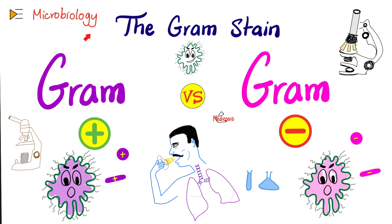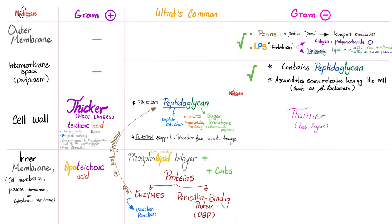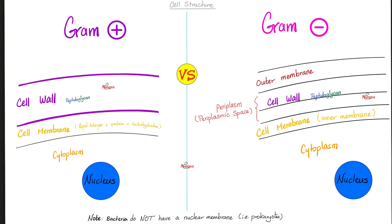Here's the structure of the bacteria. We have a cell wall, an outer membrane, inner membrane, cytoplasm, and the nucleus in the center of the cell. This structure applies for the gram-negative. For the gram-positive, there is no outer membrane, and the peptidoglycan will be thicker. Both gram-positive and gram-negative have peptidoglycan and a phospholipid bilayer. The peptidoglycan is much thicker in the gram-positive but thinner in the gram-negative.